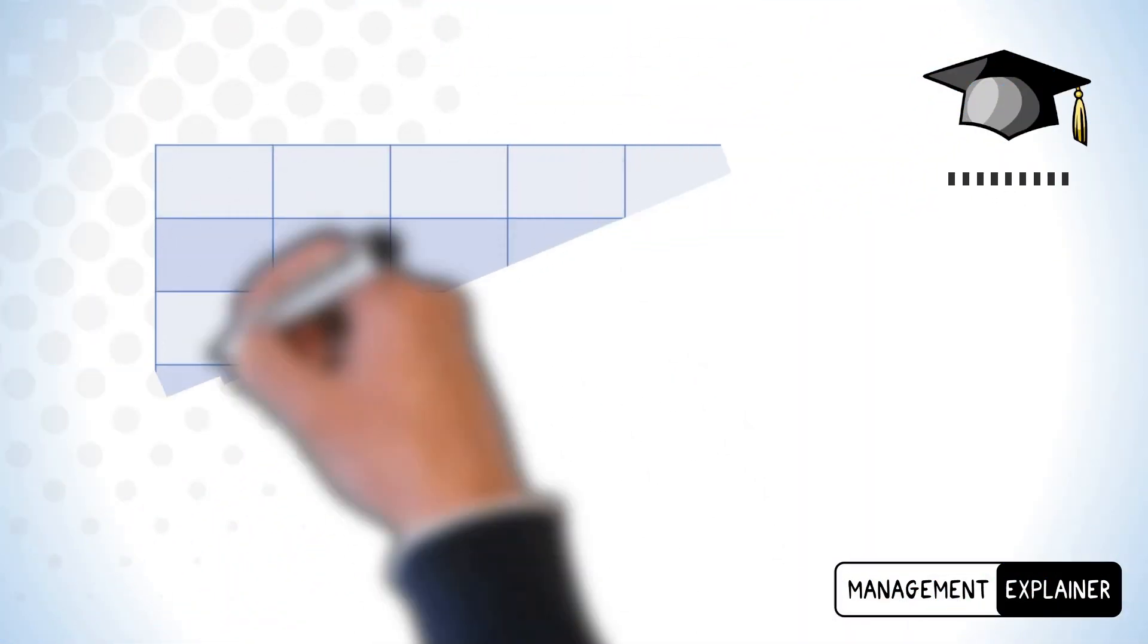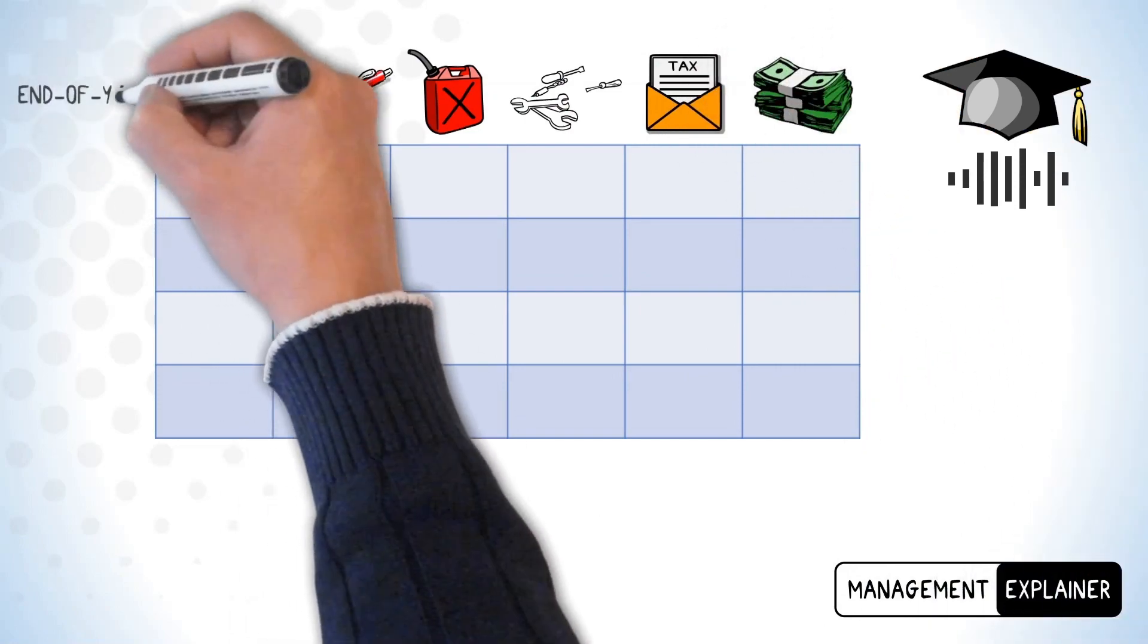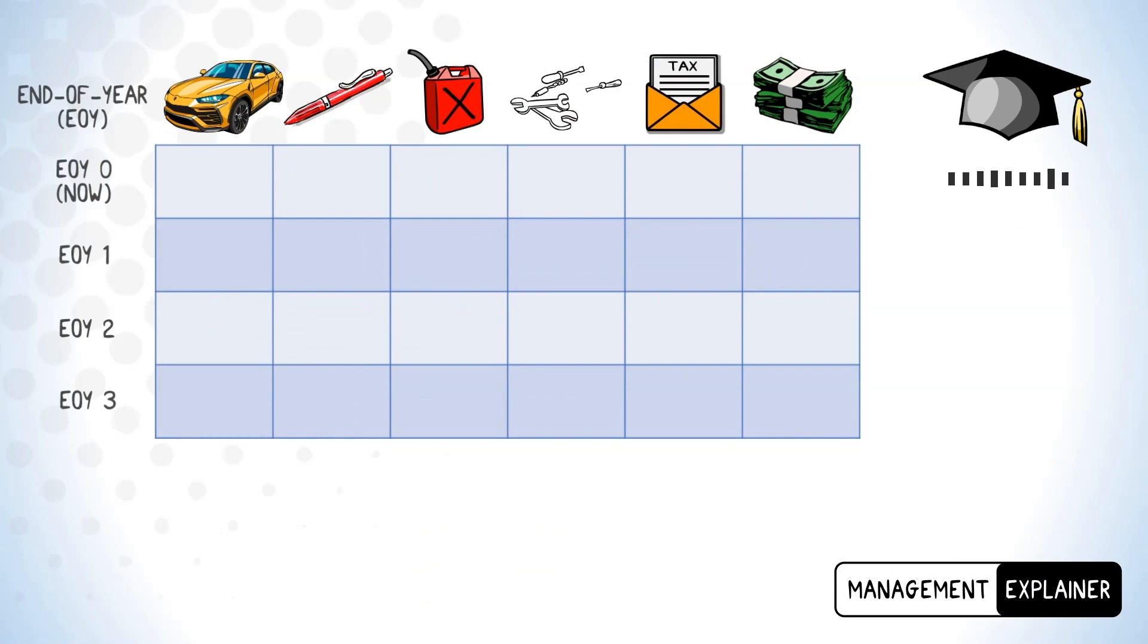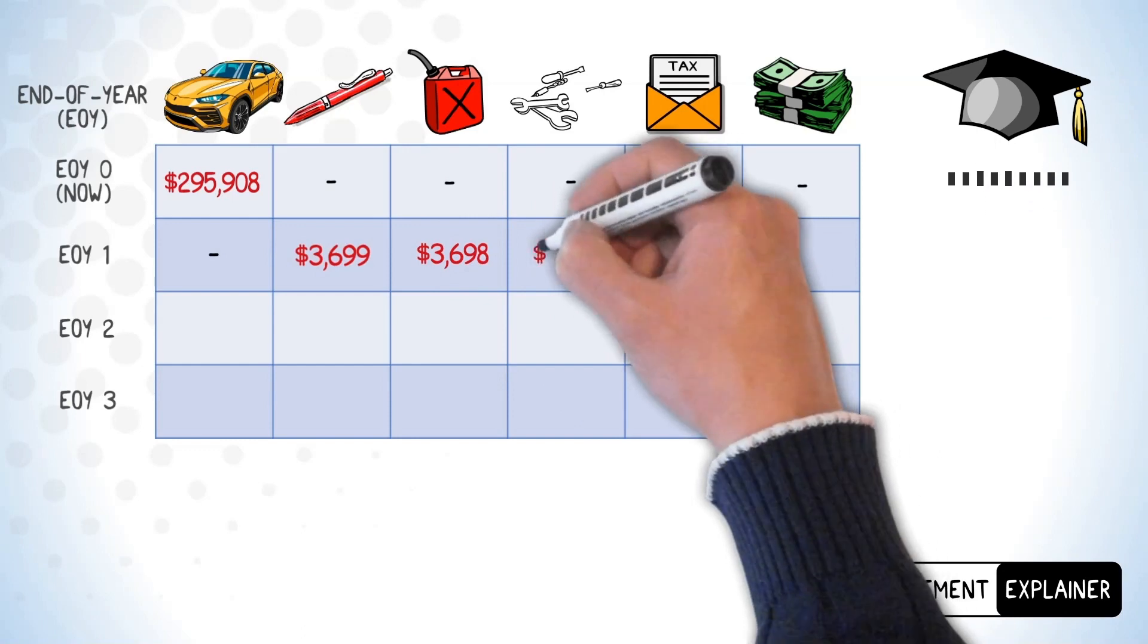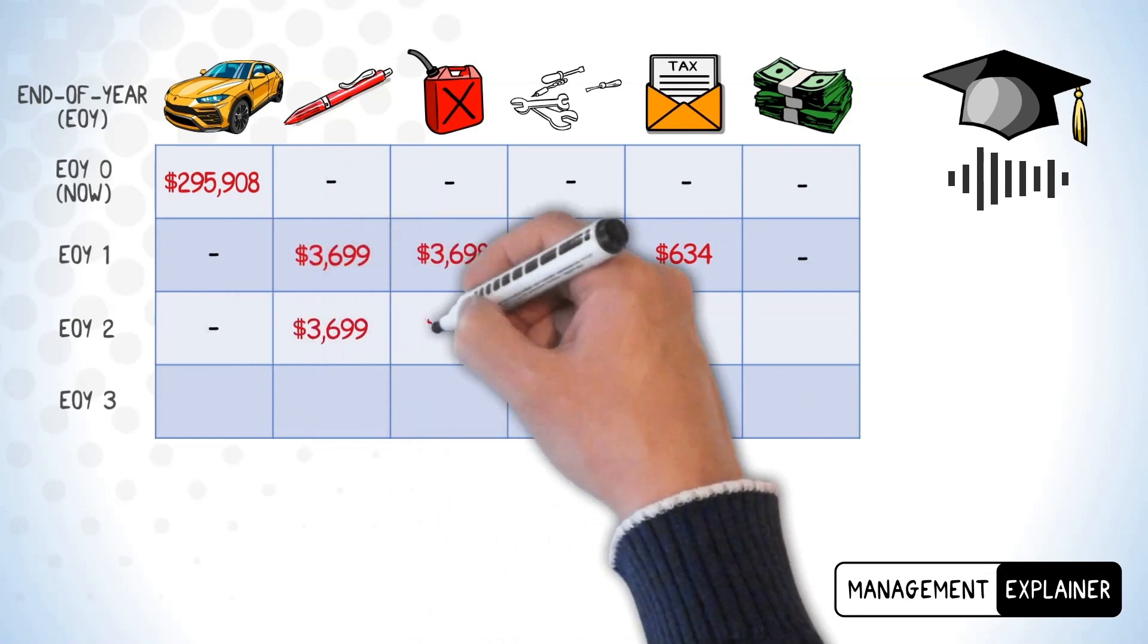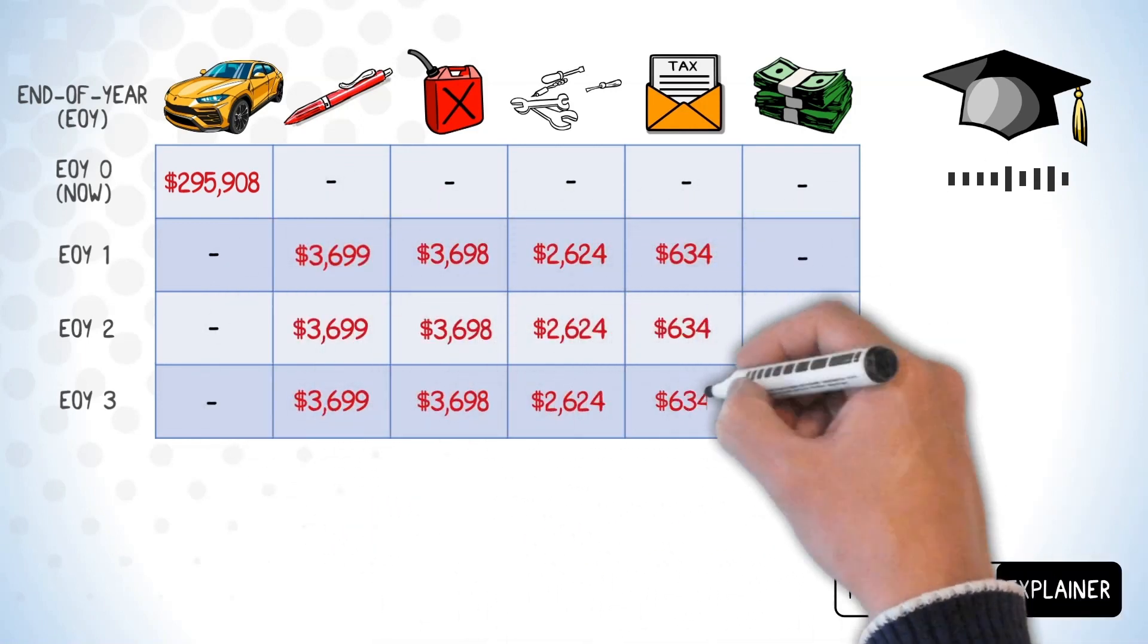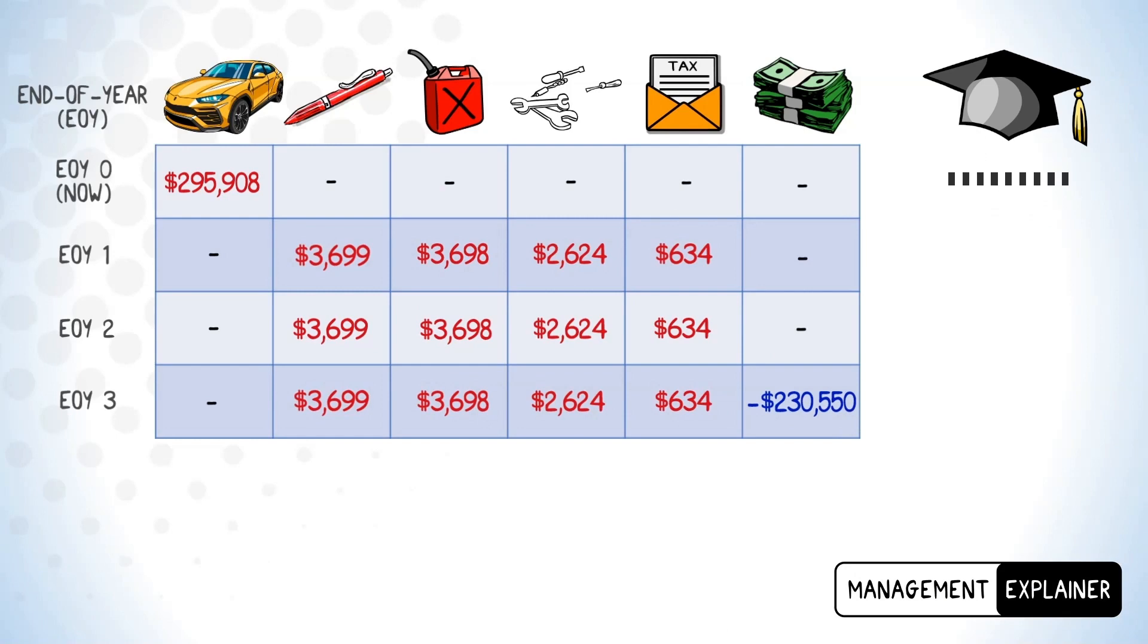Because we're modeling everything as cash flows that happen only at the end of each year, it's a good idea to draw up a simple table summarizing the cash flows as we go along. So let's start with the present, which we're showing as EOY 0. Here we have the purchase of the vehicle resulting in a cost of $295,908. Then we start running the car. At EOY 1 we have insurance costs of $3,699, fuel costs of $3,698, service and maintenance costs of $2,624, and road tax is $634. The same costs are repeated at EOY 2 and EOY 3. However, because our ownership ends here with the sale of the car, we plan to receive back $230,550. Because this is a cash inflow rather than a cost, we're showing it as a negative value.